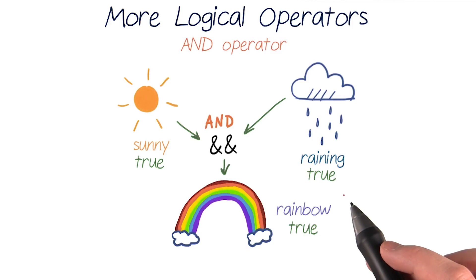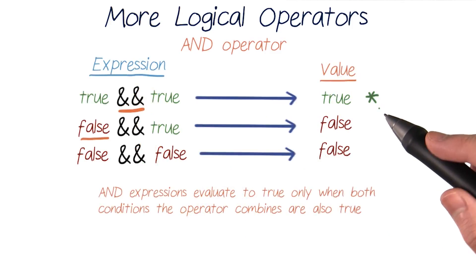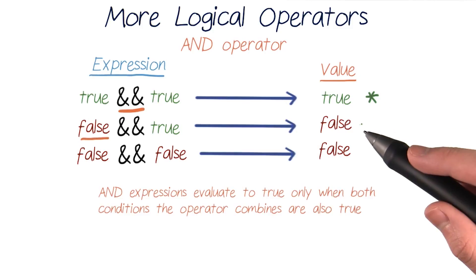This is like how an and operator works to produce a true value. For an and expression that combines two test conditions, both of its conditions must be true for the whole expression to evaluate to true. And in any other case, the expression will evaluate to false.